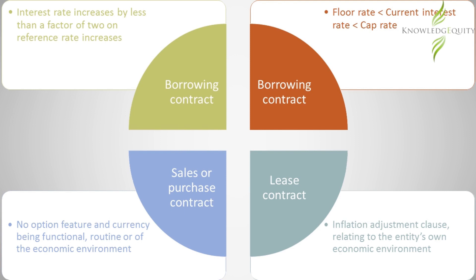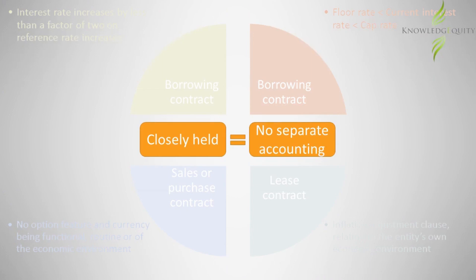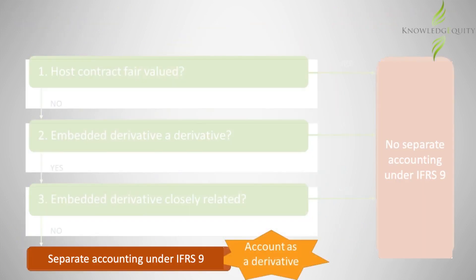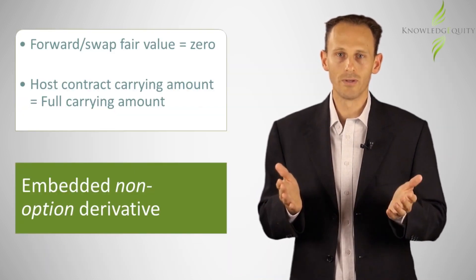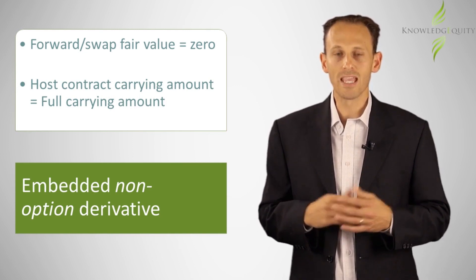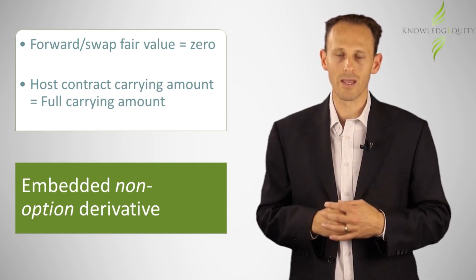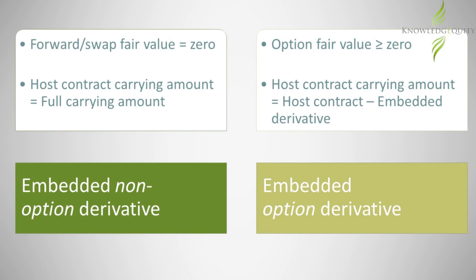In all of these situations, the embedded derivative would be deemed closely related, and would not need to be separately accounted for. However, if the embedded derivative does need to be separately accounted for, it should be treated as a derivative and valued accordingly. An embedded non-option derivative, such as a forward or a swap, will have a fair value of zero at inception. In this situation, the host contract will have the full carrying amount. An embedded option derivative will have a fair value reflecting its terms and features, and the carrying amount of the host contract will be reduced by the embedded option that has been separated. The embedded derivative is then revalued at the end of each period, and the gain or loss will be taken direct to profit and loss.